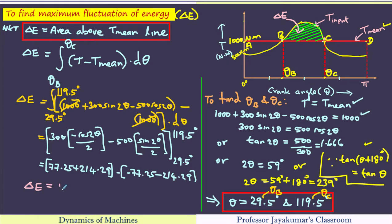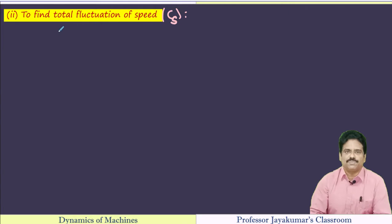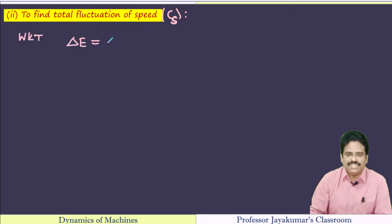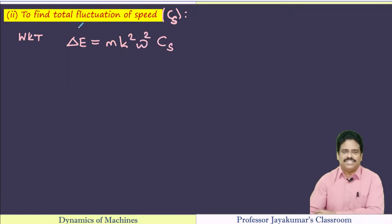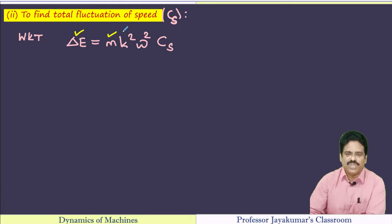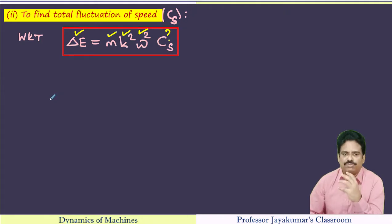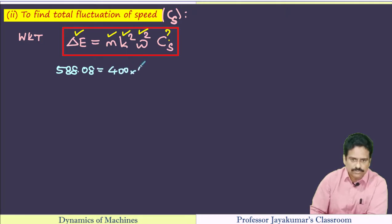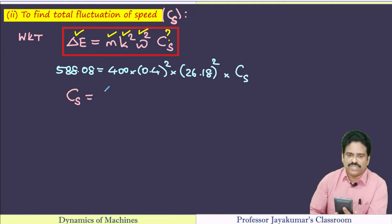We calculated delta E as 583.08 Newton meters. To find the coefficient of fluctuation of speed, we use the formula: delta E equals m·k²·ω²·C_s. Delta E, m, k, and omega are all known, so we substitute and solve for C_s. By calculation, C_s equals 0.01329, which is 1.3%.